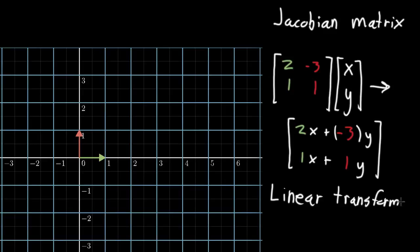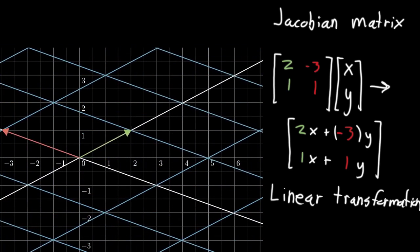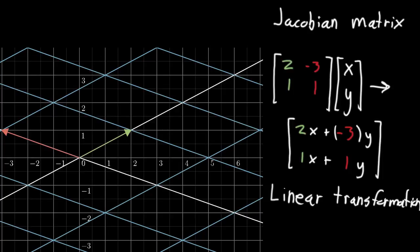So what I'm going to do is just show you what this particular transformation looks like on the left here, where every single point on this blue grid, I'm going to tell the computer, hey, if that point was x, y, I want you to take it to 2x plus negative 3y, 1x plus 1y. And here's what it looks like. So let me just play it out here. All of the points in space move, and you end up in some final state here.